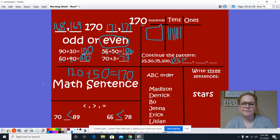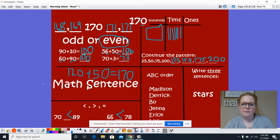All right, let's take a look at our ABC order. We have Madison, Derek, Bo, Jenna, Eric, and Lillian.